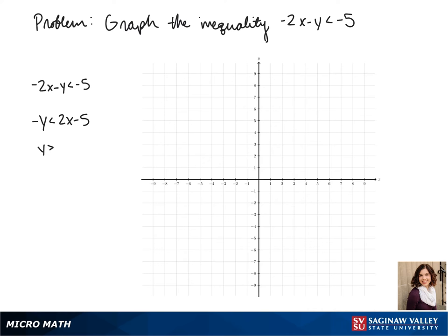We divide both sides by a negative, and our sign flips, so it's y > -2x + 5.